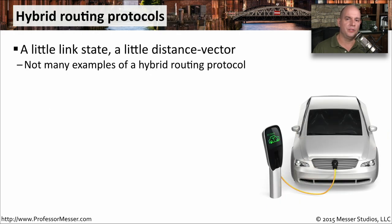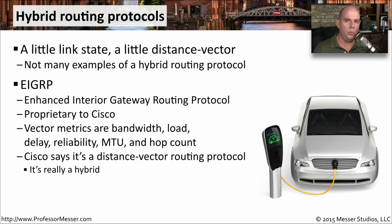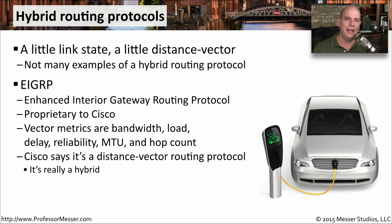A hybrid routing protocol has some characteristics of a link state routing protocol and some characteristics of a distance vector routing protocol. An example of a hybrid routing protocol would be EIGRP — Cisco's Enhanced Interior Gateway Routing Protocol. It's a very powerful routing protocol that can look at many different characteristics: bandwidth, load, delay, reliability, MTU, and hop count. It can use all of those, or a number of them, to make a decision on what the best route might be to a location.